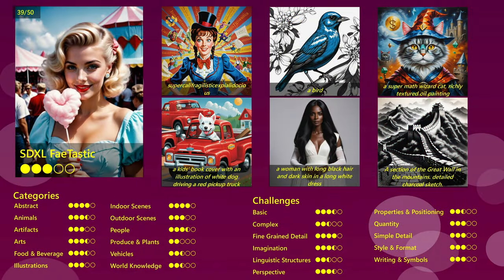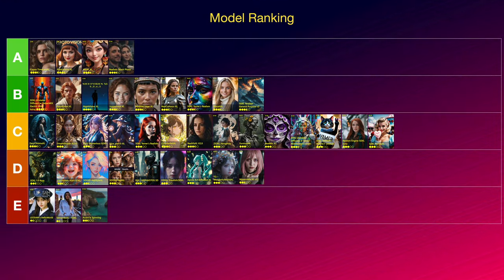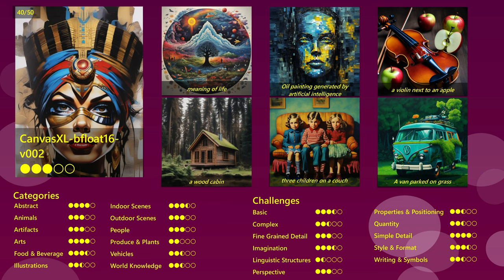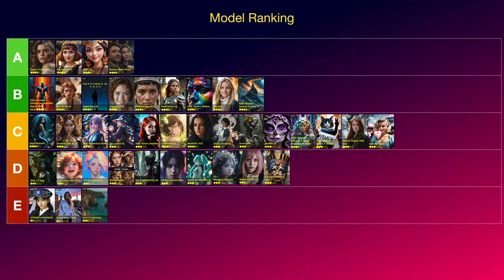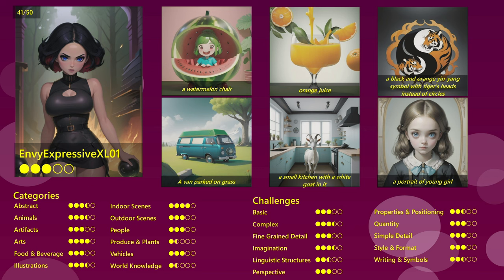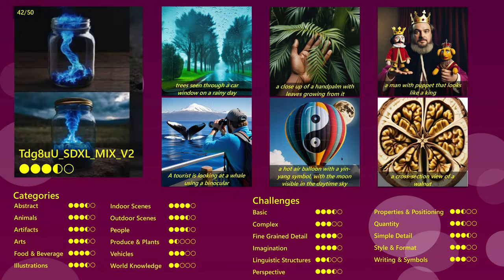The SDXL Fantastic model wasn't really fantastic and nowhere really outperforming, but you can get good and reliable images in a good quality over most categories and challenges. So it's going into C. Next comes Canvas XL Bfloat 16 V002, which sometimes created quite interesting and creative images, and sometimes didn't work well at all. I wasn't quite sure if it's a C or a D, but then I put it into D. Next comes NV Expressive XL 01, which has a very distinctive style that I really like — very comic, anime-like, with smooth colors — but it does have quality issues, so I must put it into D. Next comes TDG8UU — and the model is surely better than its name. Nothing outstanding, but a good and reliable quality in most categories and challenges. For that reason, I'm putting it into C.